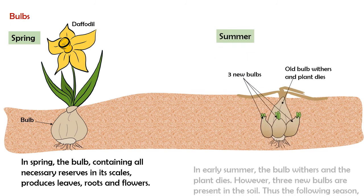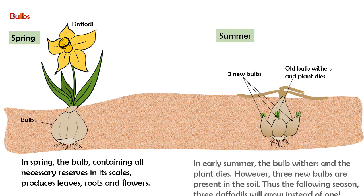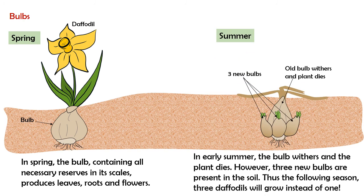In early summer, the bulb withers and the plant dies. However, three new bulbs are present in the soil. Thus, the following season, three daffodils will grow instead of one.